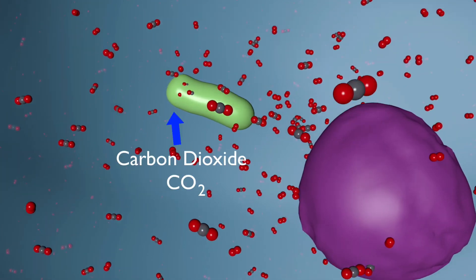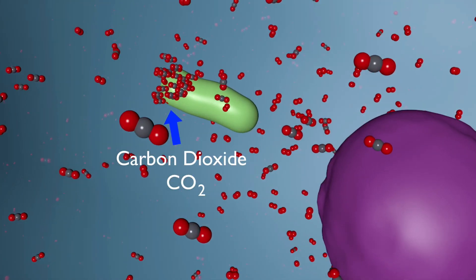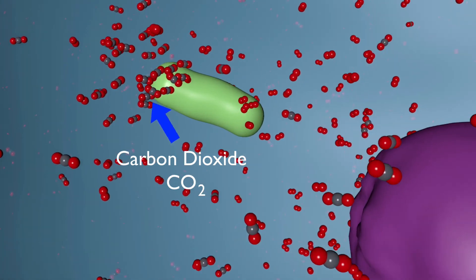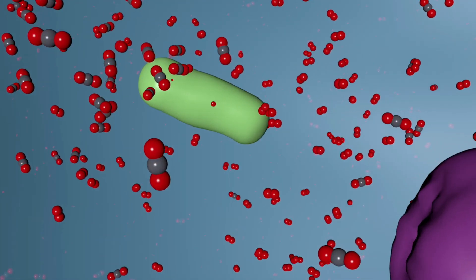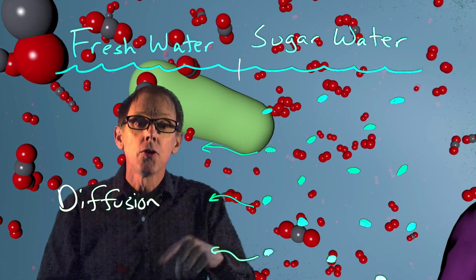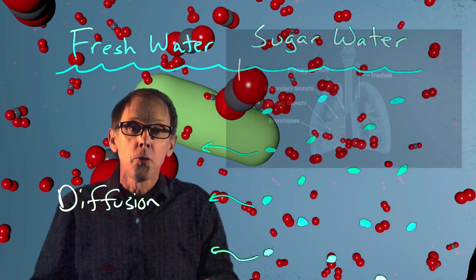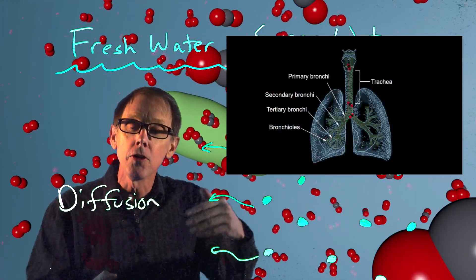A byproduct of respiration is carbon dioxide, which diffuses out of the mitochondria, then out of the cell and into our blood, to be transported to our lungs, where it diffuses into our breath.